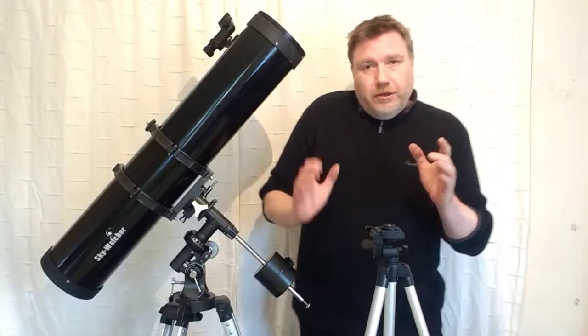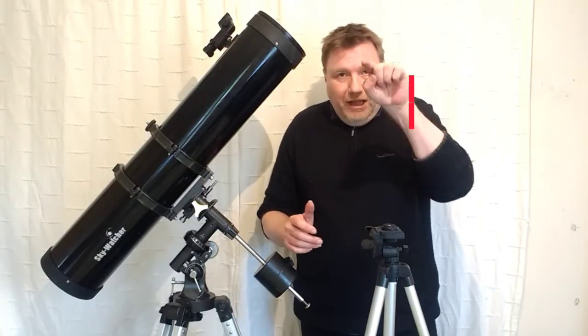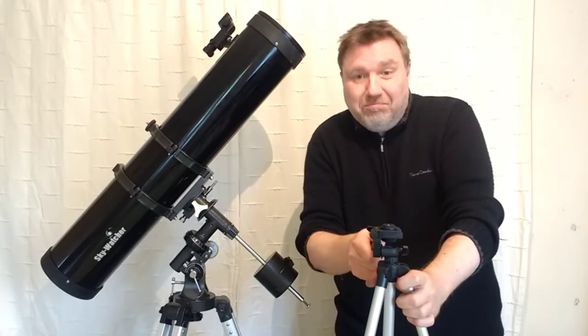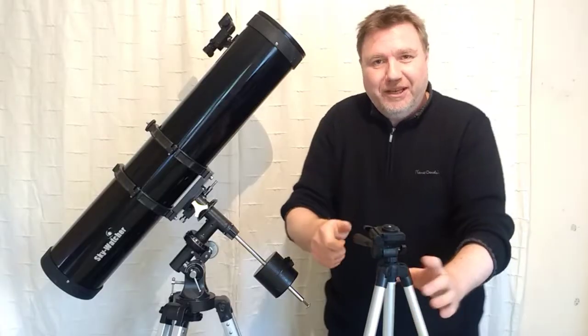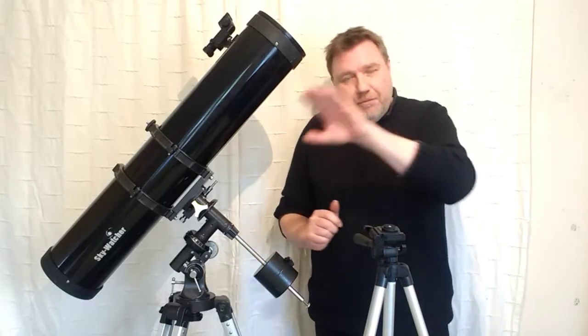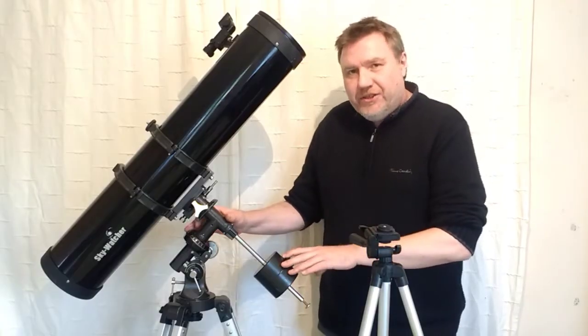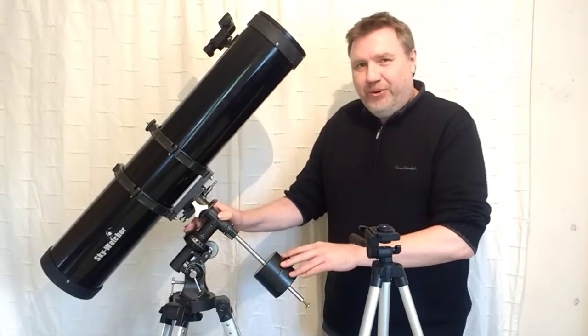Now this is just called an alt-az mount, and that's just basically a fancy word for up, down, left and right. Your altitude is your up and down, and your left and right is your azimuth. Now, if stars moved across the sky like that, then one of these type of mounts would be perfect, but they don't. And like I say, they're moving in an arc, so without further ado, let's get into how you set up one of these equatorial mounts.